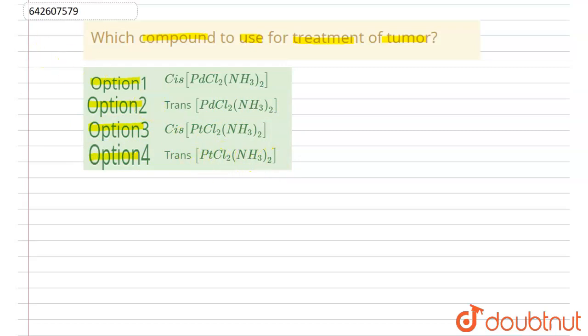So in the question we have been asked that out of these compounds, which compound is used for the treatment of tumor? Tumor is basically a type of cancer and it's a very vulnerable disease.